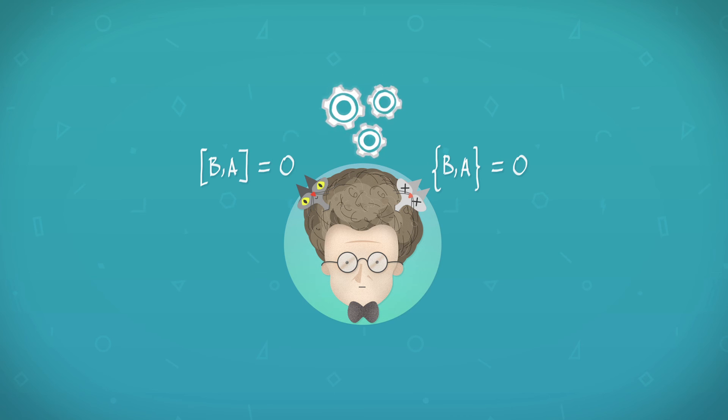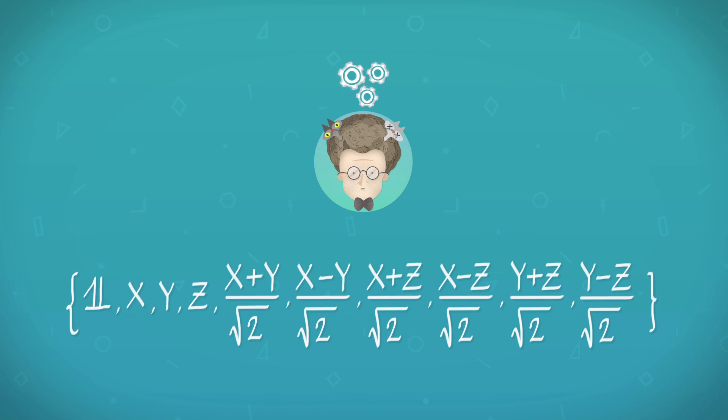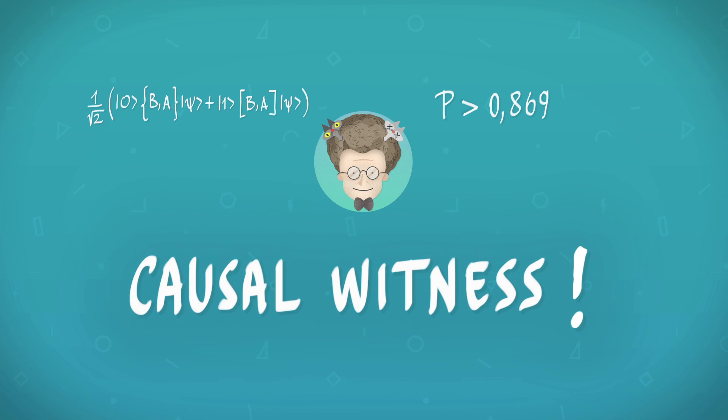We found that the hardest possible test is to guess whether the pairs of these 10 operations commute or anti-commute. The best one can do, without having superpositions of causal orders, is to guess with 87% probability of success whether they commute or anti-commute. So, if you have a success rate better than this in your experiment, you have witnessed a superposition of causal orders.